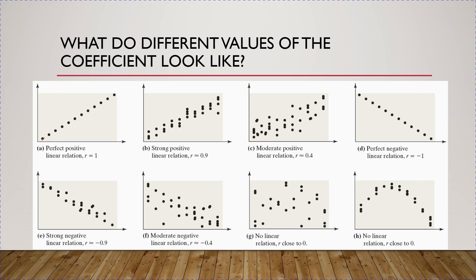Here's r equal to 1 — a perfect positive linear relationship with a perfect straight line. r equal to negative 1 is literally a perfect straight line sloping down. For r equal to 0.9, you can really, really see that strong positive trend. When r is greater than 0.8, you see this strong positive linear relationship. When r is between 0.4 and 0.79, you see a moderate positive linear relationship — there's still an upward trend, just not as strong.